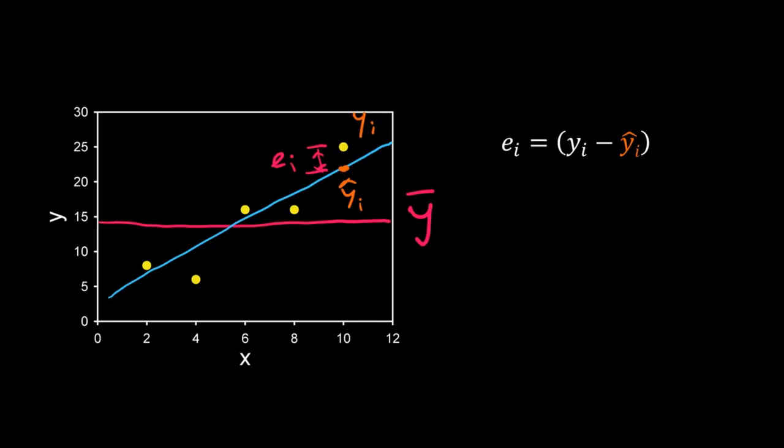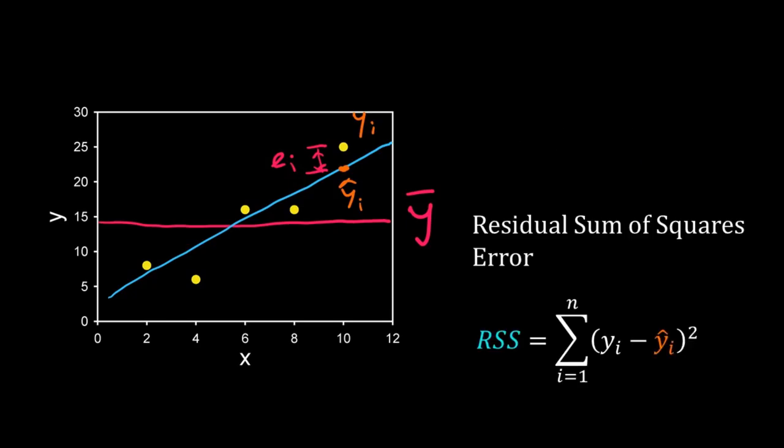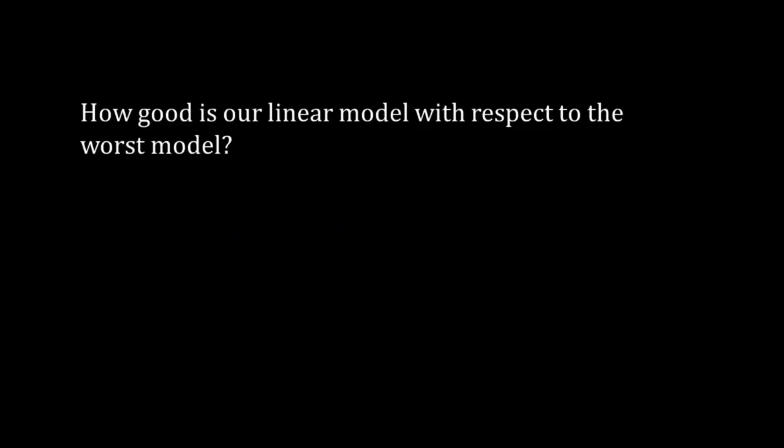Again we take the square of this error and sum the squared errors of all the data points, and by summing we get a total error of the model, the linear model. That is the Residual Sum of Squares error of a linear model. In short we call it RSS.